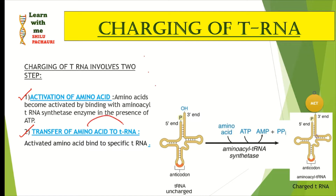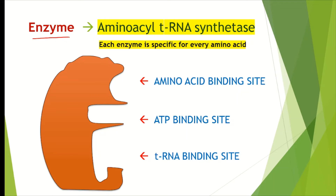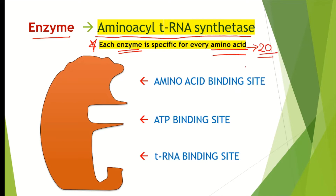Now let's discuss these two steps in detail. The enzyme involved in charging of transfer RNA is aminoacyl-tRNA synthetase. Each enzyme is specific for every amino acid — since there are 20 different kinds of amino acids, we have 20 different kinds of aminoacyl-tRNA synthetase. This enzyme has three different binding sites: an amino acid binding site, an ATP binding site, and a transfer RNA binding site.